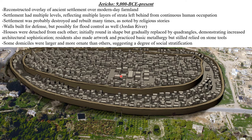The houses were detached from one another. Initially they were round in shape, but gradually were replaced by quadrangles, demonstrating increased architectural sophistication — a core sign of civilization. Residents of Jericho also made artwork and practiced basic metallurgy, although they still relied mostly on stone tools. Some domiciles were larger and more ornate than others, suggesting a degree of social stratification and that this settlement would have had rulers of some kind — one of the elements of Childe's parameters for cities. Jericho, however, is still too small to be considered a city. As such, it is a civilization and a large settlement, but not truly a city.